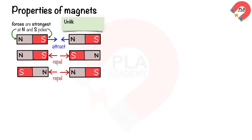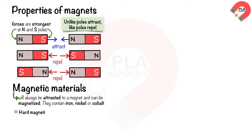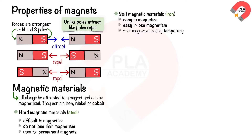Unlike poles attract; like poles repel. Magnetic materials will always be attracted to a magnet and can be magnetized. Magnetic materials contain iron, nickel, or cobalt — for example, steel is mainly iron. There are two types of magnetic materials: hard magnetic materials such as steel are difficult to magnetize but do not readily lose their magnetism; they are used for permanent magnets.